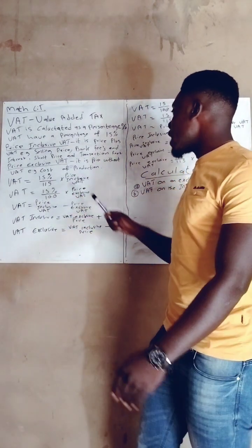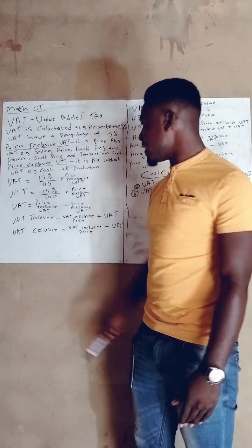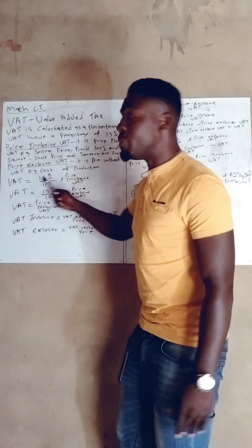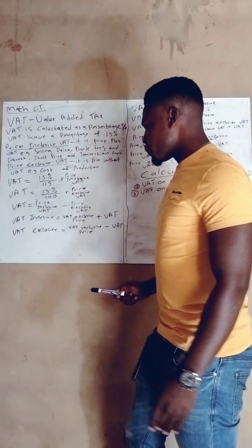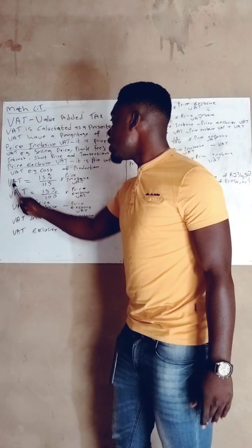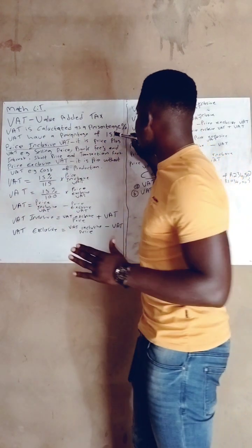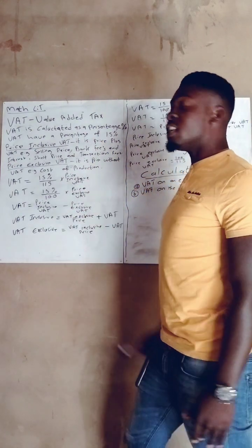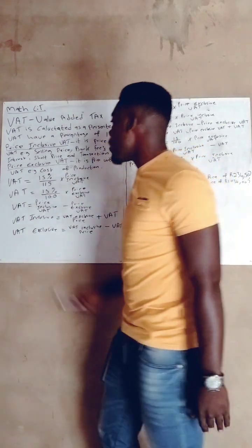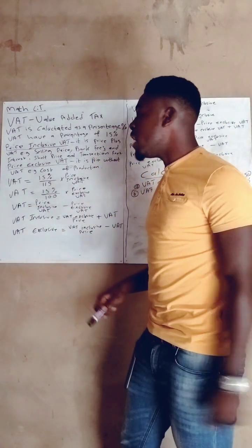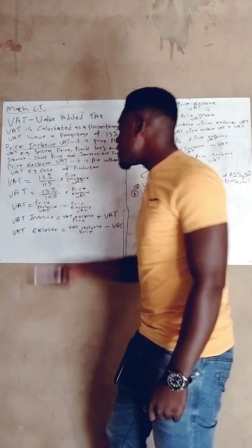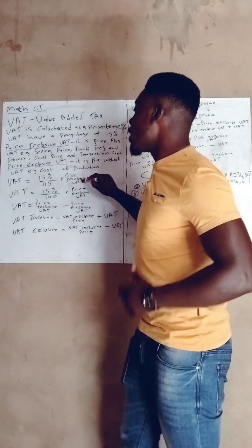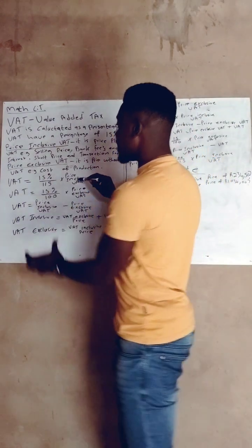Now we have to know how to calculate VAT. VAT equals 15% divided by 115. Let me explain — remember we said VAT is 15%. When calculating VAT on a VAT-inclusive price, we write: VAT = 15% ÷ 115 × price. But if the price is VAT-exclusive, we divide by 100. So it is either 15% divided by 115 (when VAT is included) or 15% divided by 100 (when VAT is excluded).